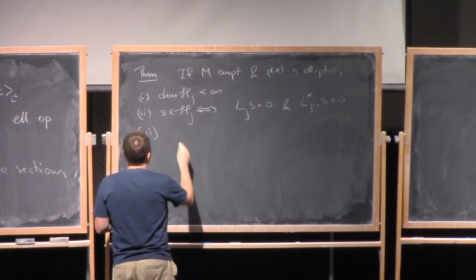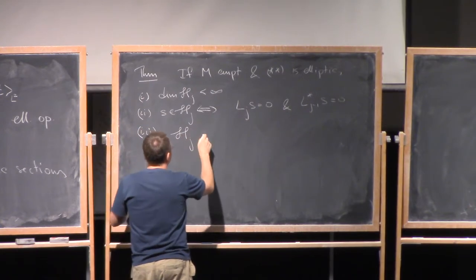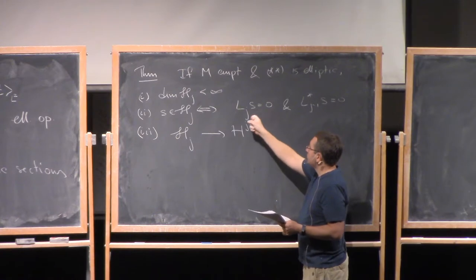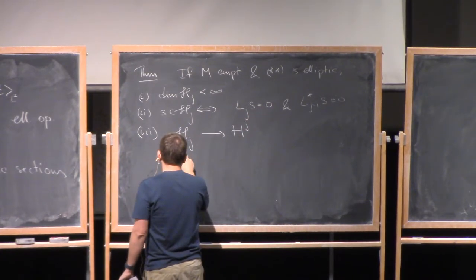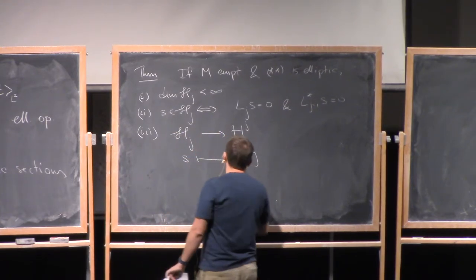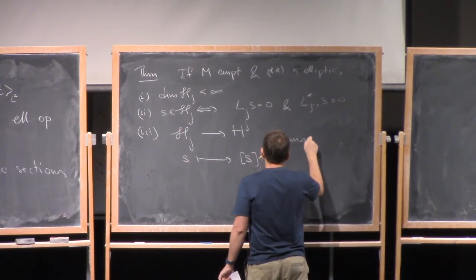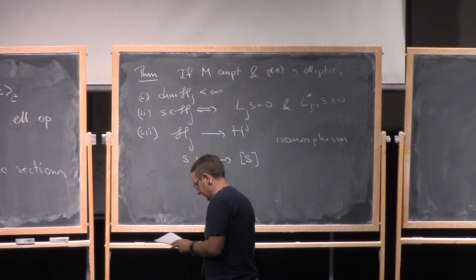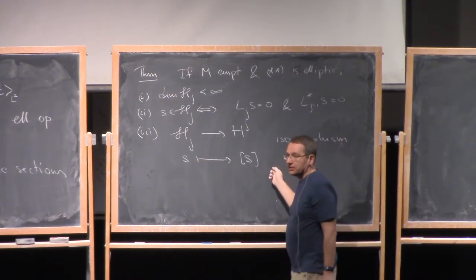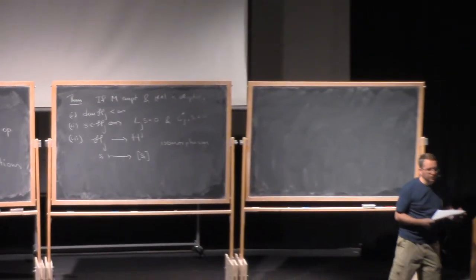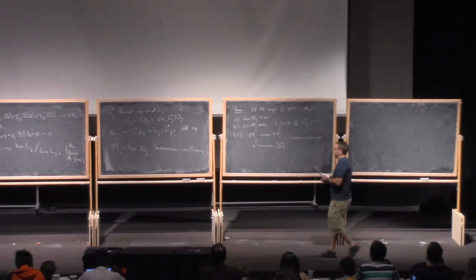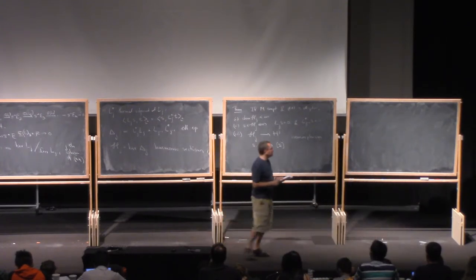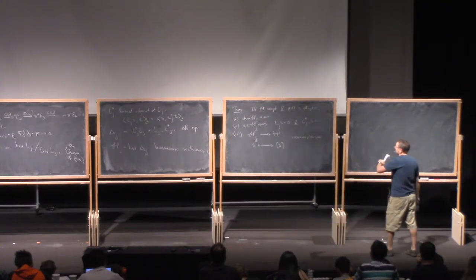And the third claim and the main one is that we have a natural map from the space of harmonic maps into the J's cohomology group of the complex. Since, whenever we have a harmonic section, it is closed. So we can take its cohomology class. So S is mapped simply to the cohomology class of S. And the claim is that this is an isomorphism. So the proof of this theorem is not really hard. I gave a proof in my notes. So if you are interested, take a look. But this is really sort of an elementary computation with what we have done so far.